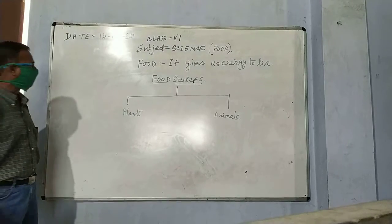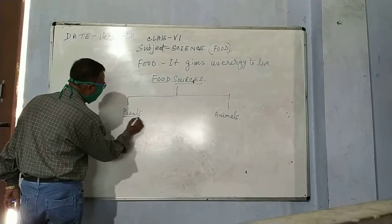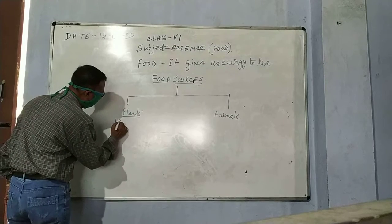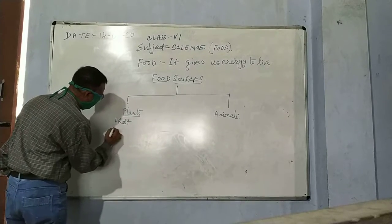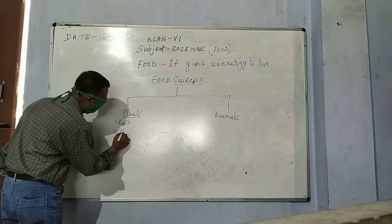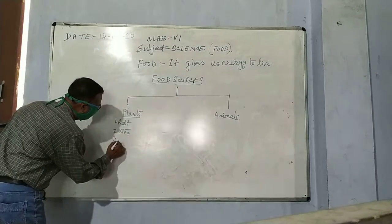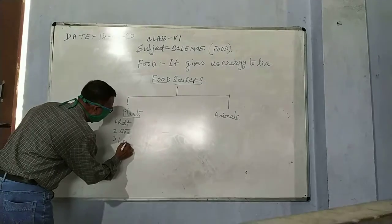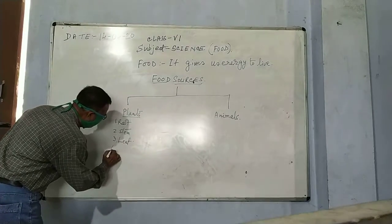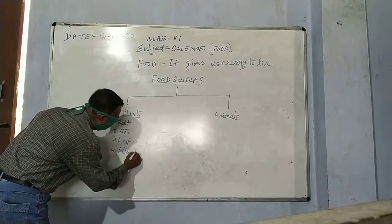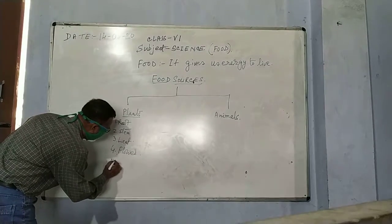Which is the plant part? We take food, first root, second stem, third leaf, fourth flower, or last of all, fruit.